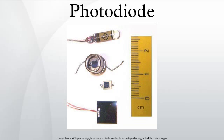For a given spectral distribution, the photocurrent is linearly proportional to the illuminance. Although this mode is faster, the photoconductive mode tends to exhibit more electronic noise. The leakage current of a good PIN diode is so low that the Johnson-Nyquist noise of the load resistance in a typical circuit often dominates.